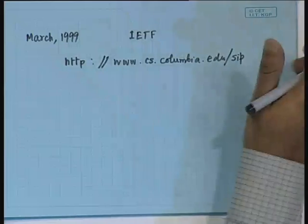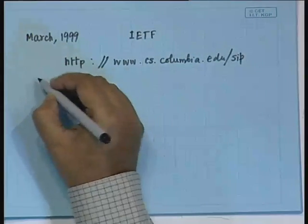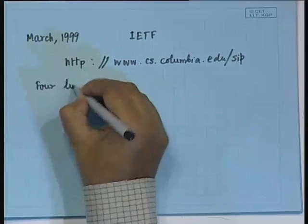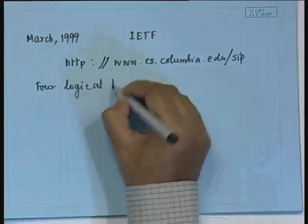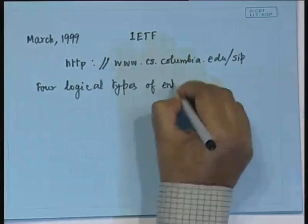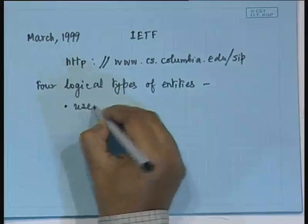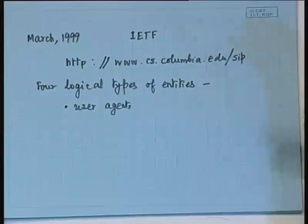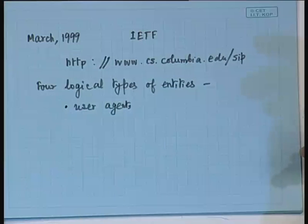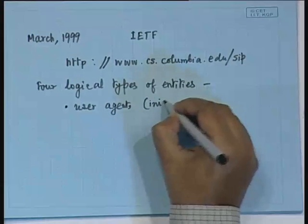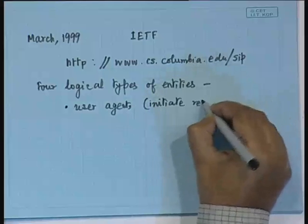To give a brief overview of SIP, there are four logical types of entities that participate. The first is user agents — the source or destination are referred to as user agents. User agents are the ones that initiate requests and also receive requests and participate. Their job is to initiate requests and serve as the destination.